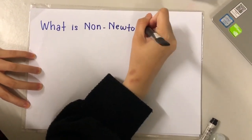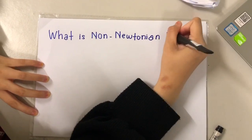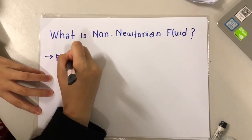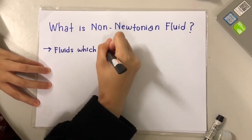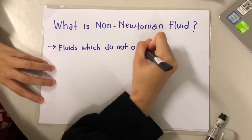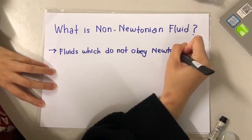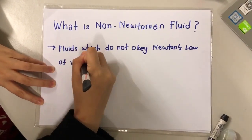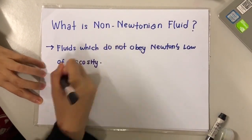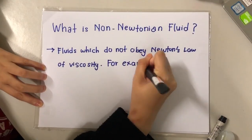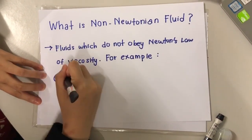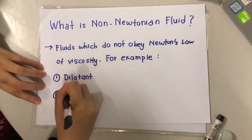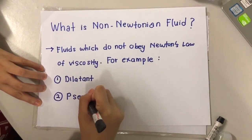Next is about non-Newtonian fluid. What is non-Newtonian fluid? Non-Newtonian fluid is defined as a fluid which does not obey Newton's law of viscosity. There are two types of non-Newtonian fluid, which are dilatant and pseudo-plastic.